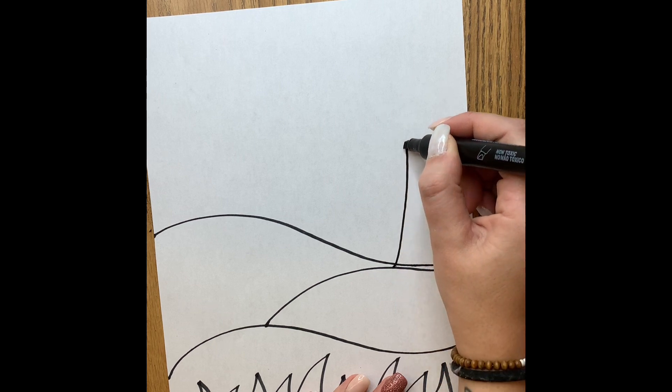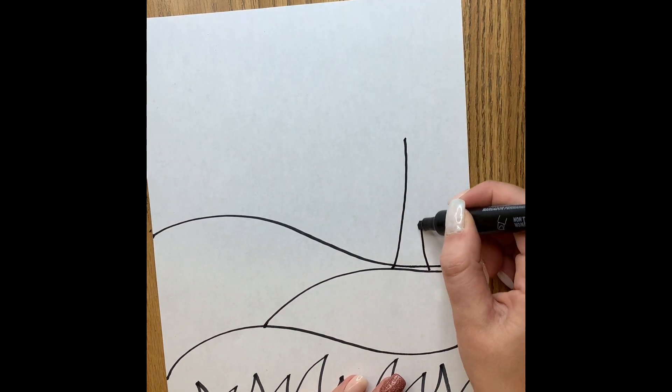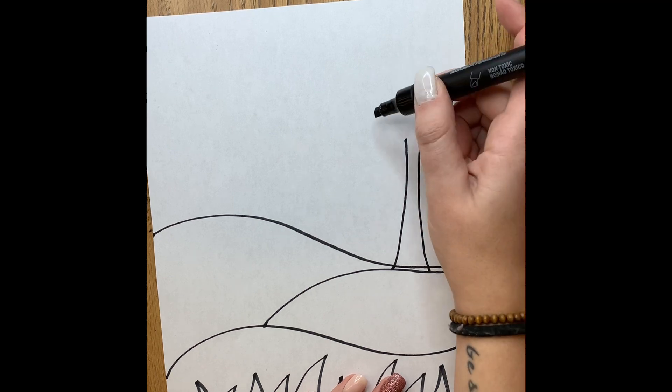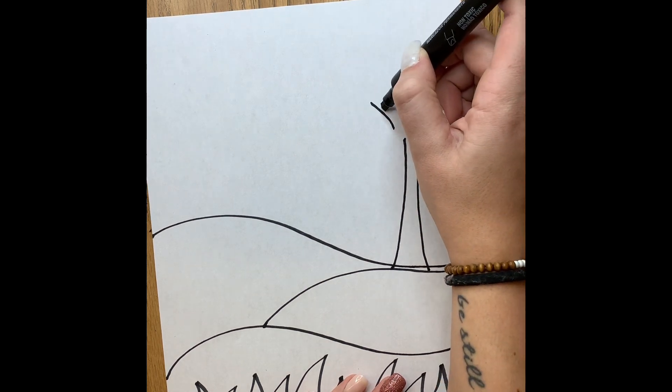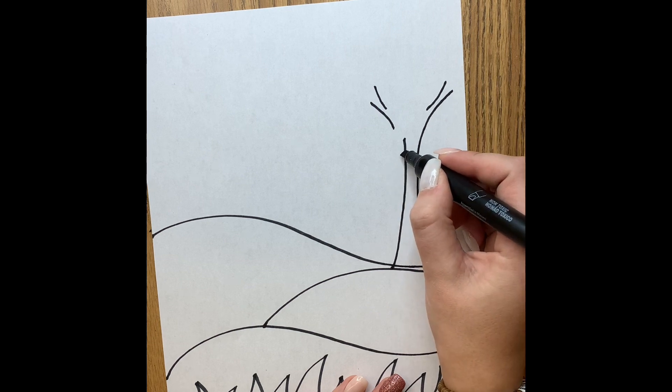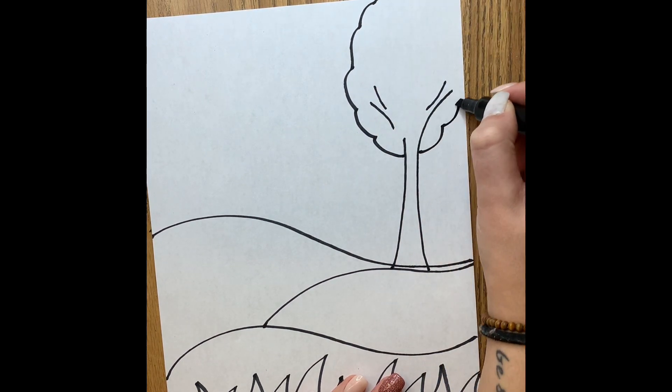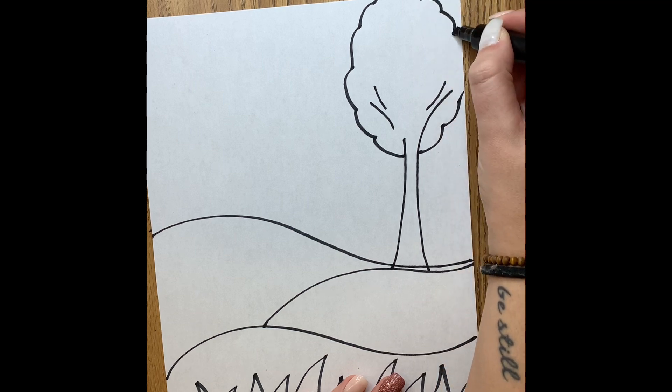So I'm going to draw my tree trunk, just going to have some branches that go off of it, and then I'm going to draw the leaves of my tree. And it might go off my page, that's okay.